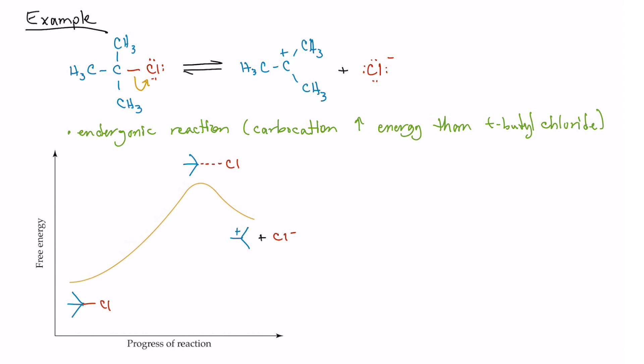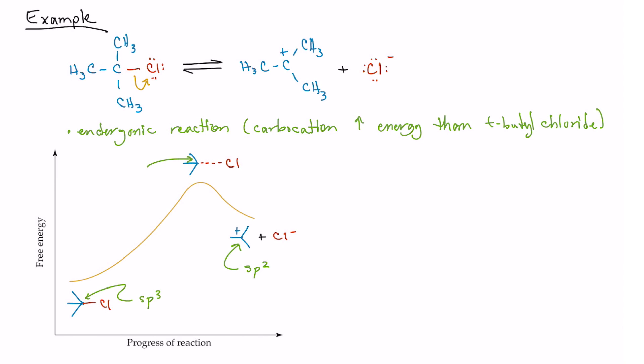Let's see what we can determine about the structure of this transition state. The carbon bonded to the chlorine in the reactant is sp3 hybridized, and the carbocation product is sp2 hybridized. Because we have a late, more product-like transition state, we would expect the transition state to be closer to sp2 hybridization than sp3. So we should expect the bond angles to be closer to 120 degrees, consistent with trigonal planar geometry, than 109.5 degrees, which is consistent with tetrahedral geometry.